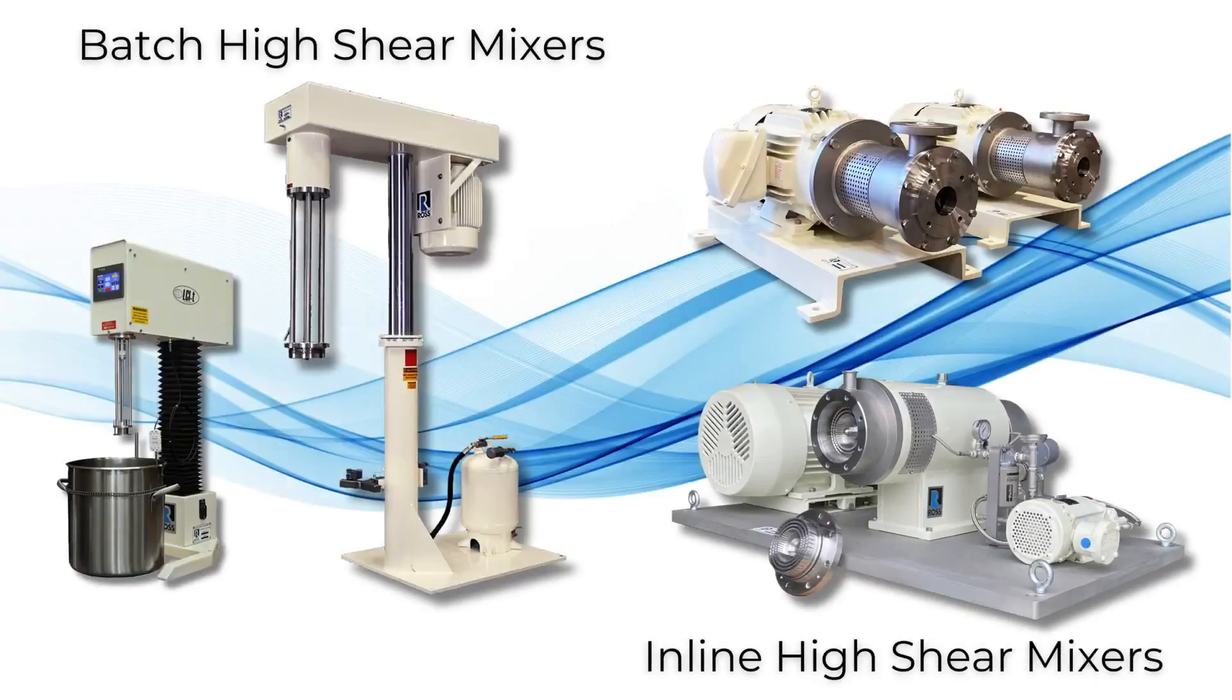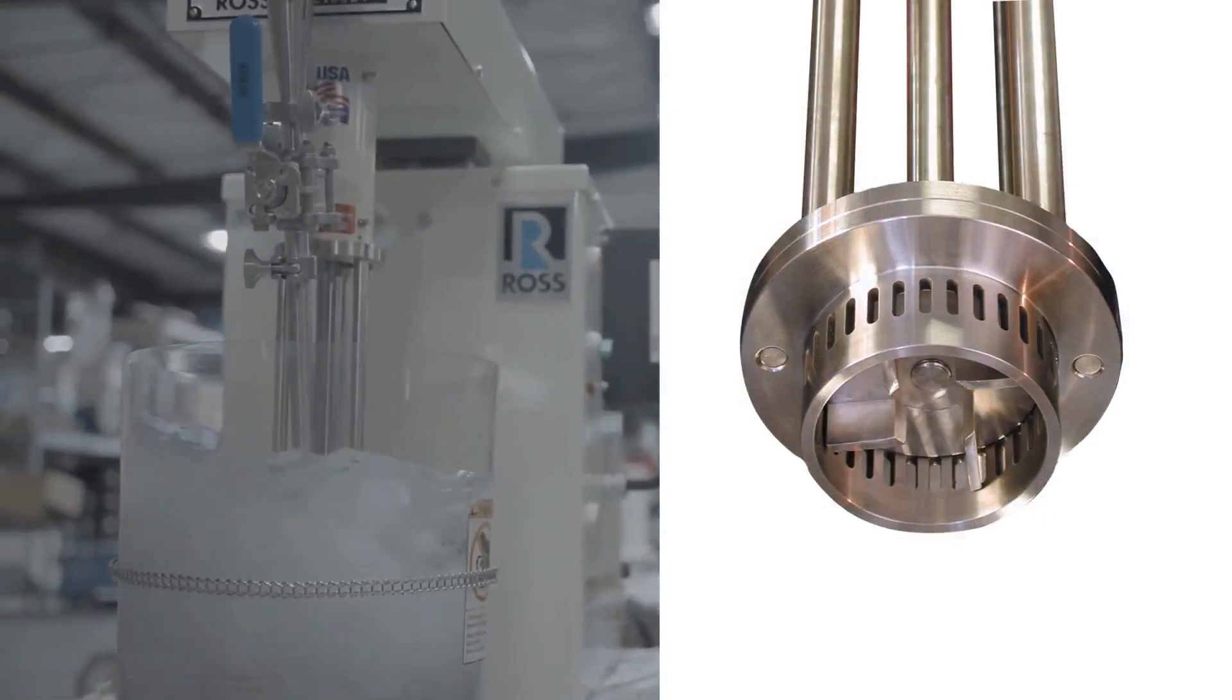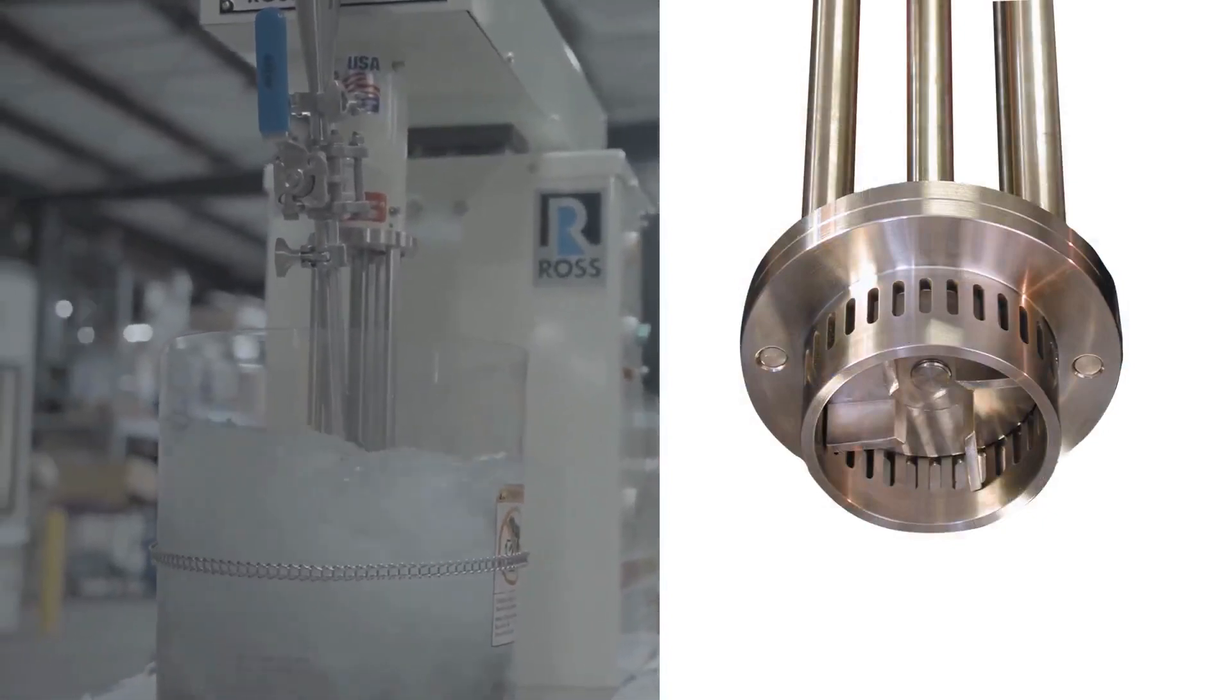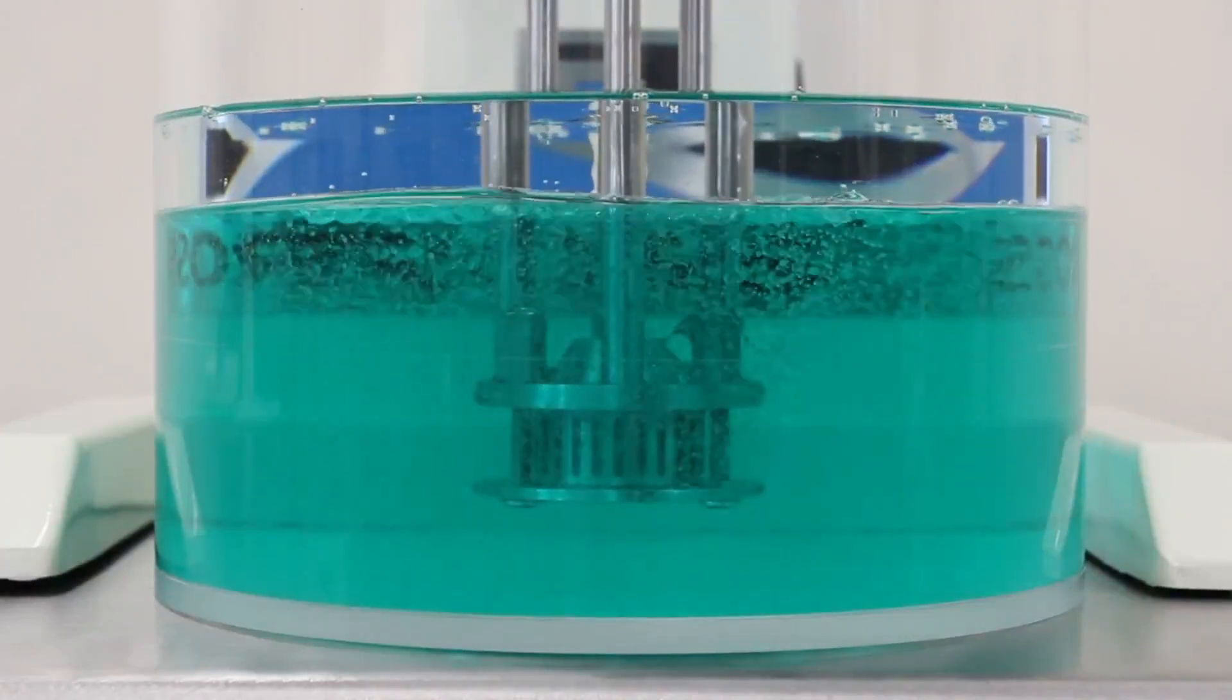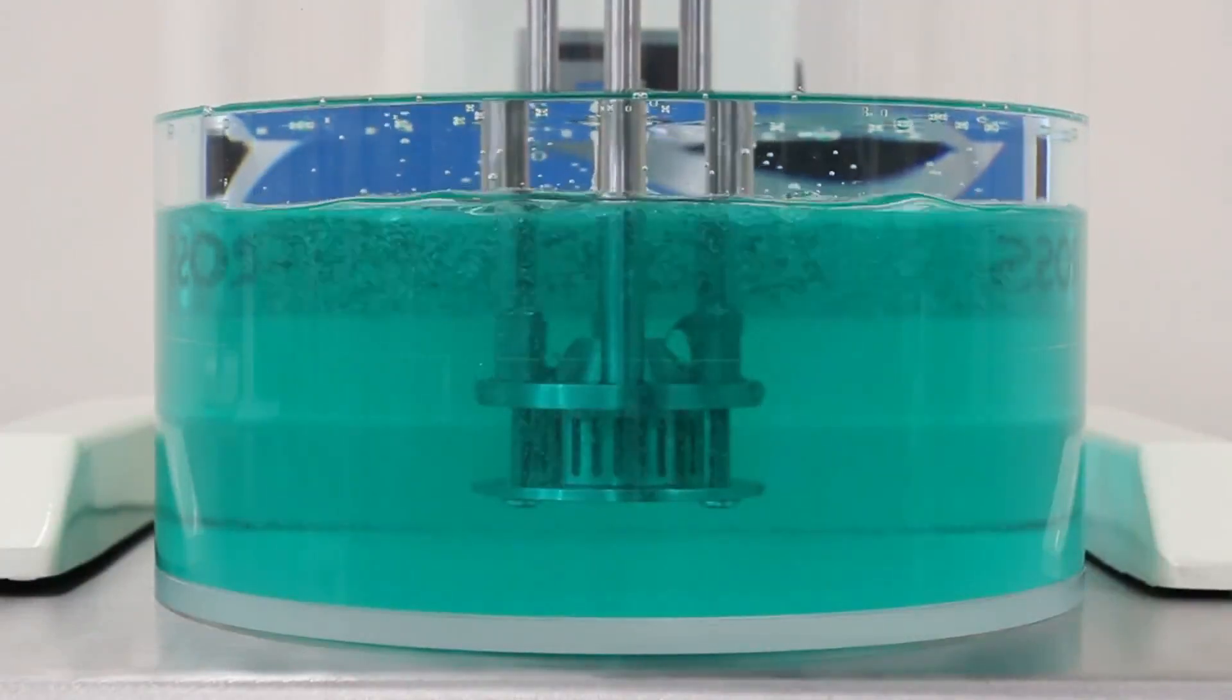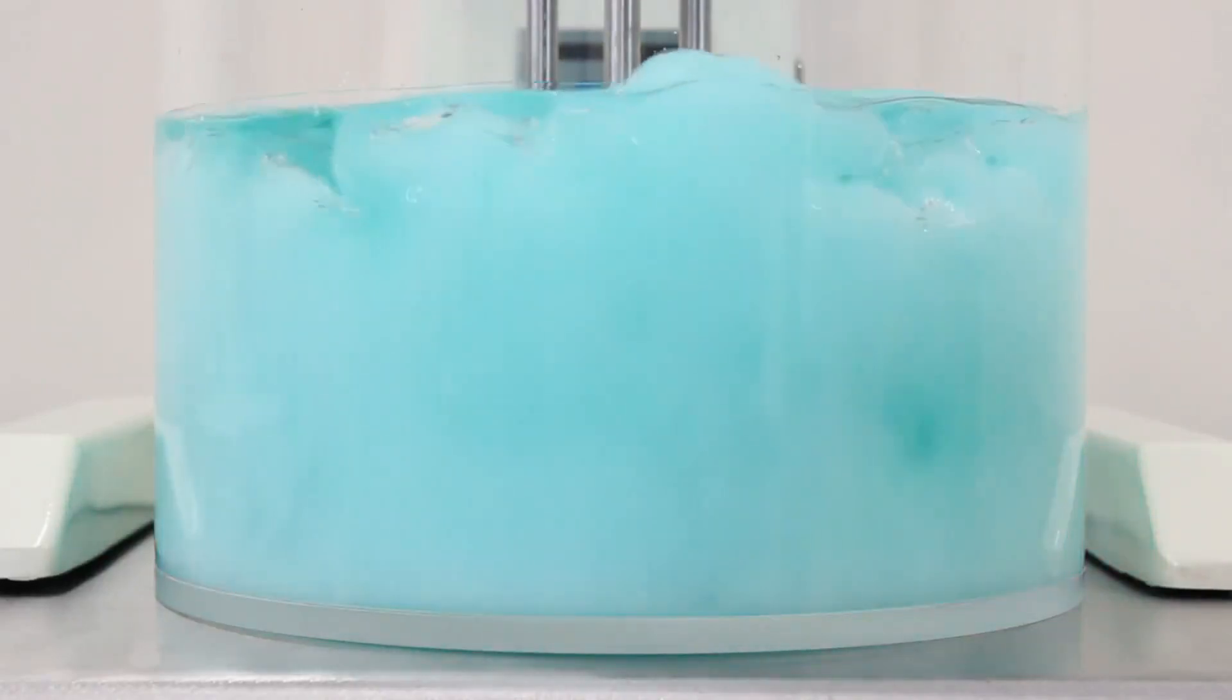Ross high shear mixers are available in batch or inline configurations and are comprised of a rotor that turns at high speed within a stationary stator. As the blades rotate, materials are continuously drawn into one end of the mixing head and expelled at high velocity through the openings of the stator. The hydraulic shear generated promotes fast mixing, breaks down agglomerates, and reduces the size of droplets.